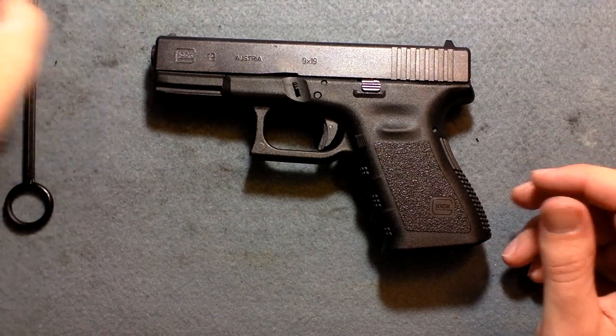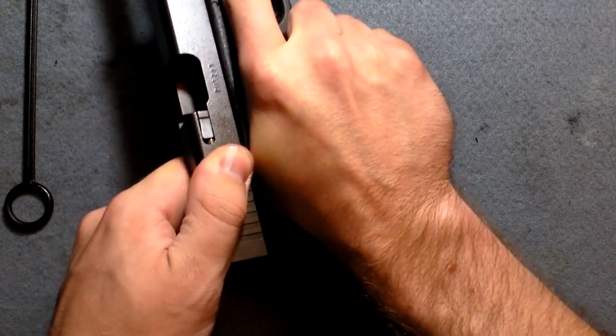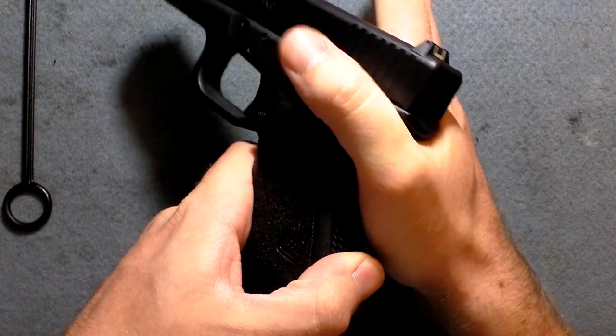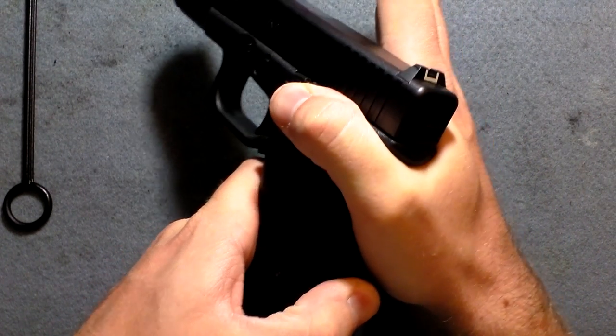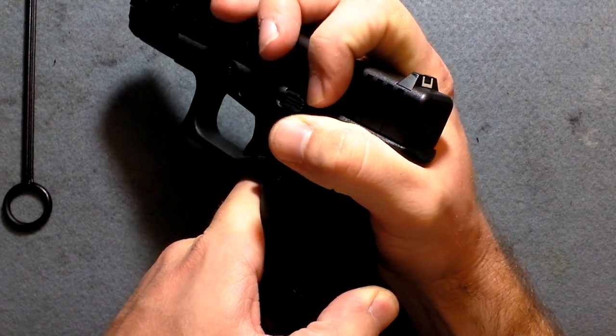So, to get started with the disassembly, what you want to do, rack the slide. Safe direction. Now, at this point you want to put your thumb across the slide in the back like this. Bring your pointer finger over the top.